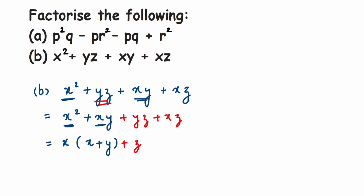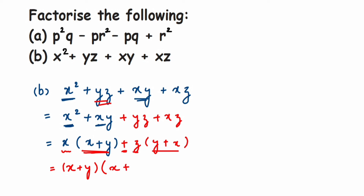From the second group, y z plus x z, I take z as common. Taking z outside, y is left from the first term and x is left from the second term, giving z times (y plus x), which is the same as z times (x plus y). Now both groups have (x plus y) as a common factor. Taking (x plus y) outside, x is left from the first group and z from the second. So the final answer is (x plus y)(x plus z).